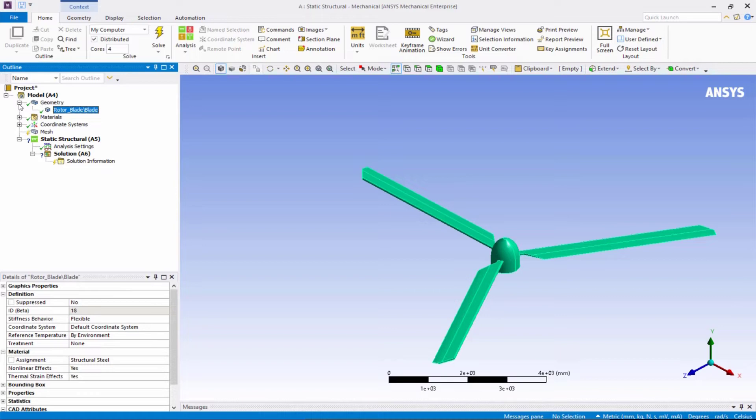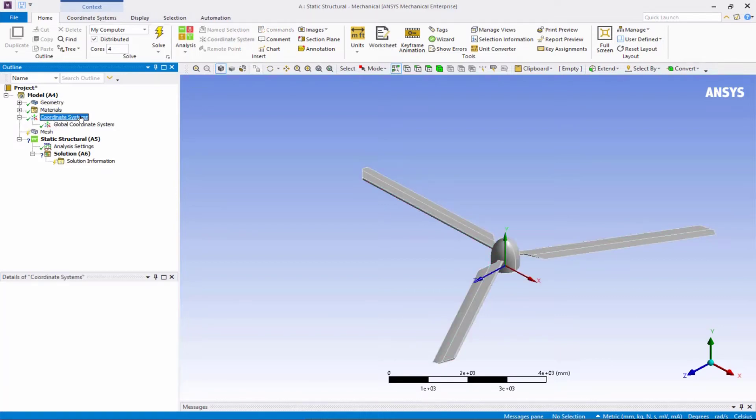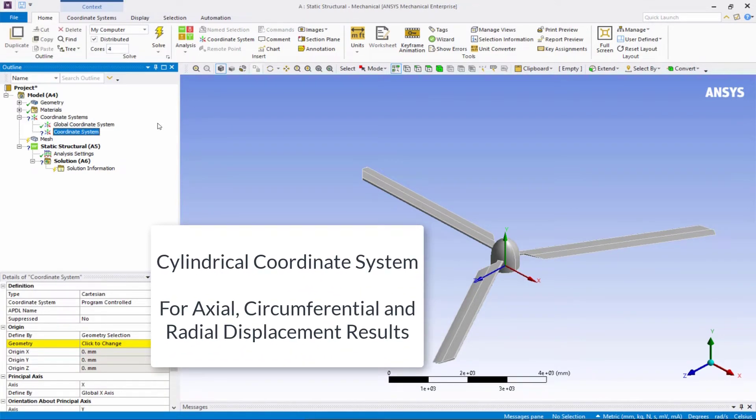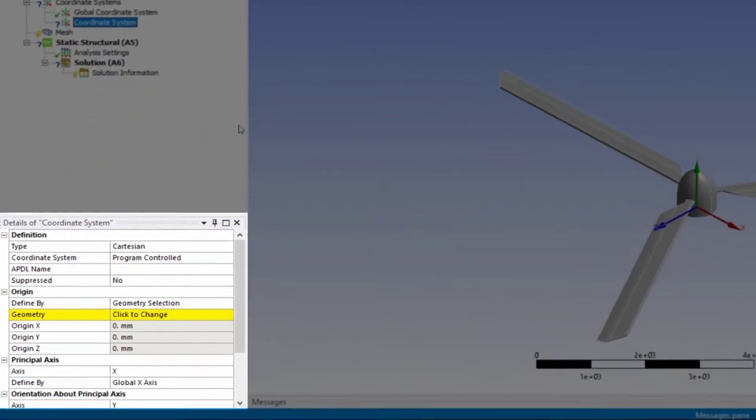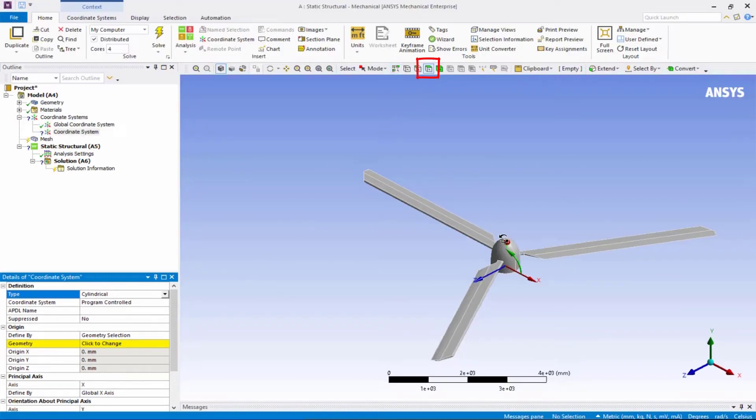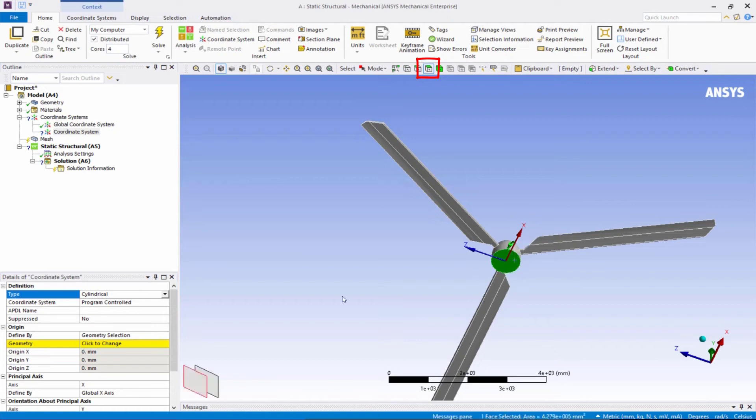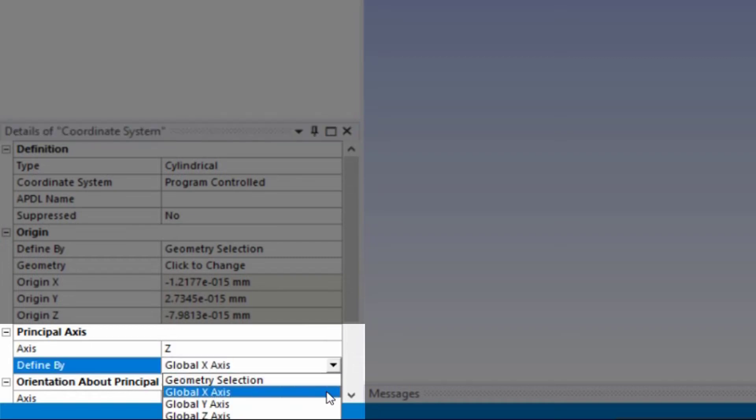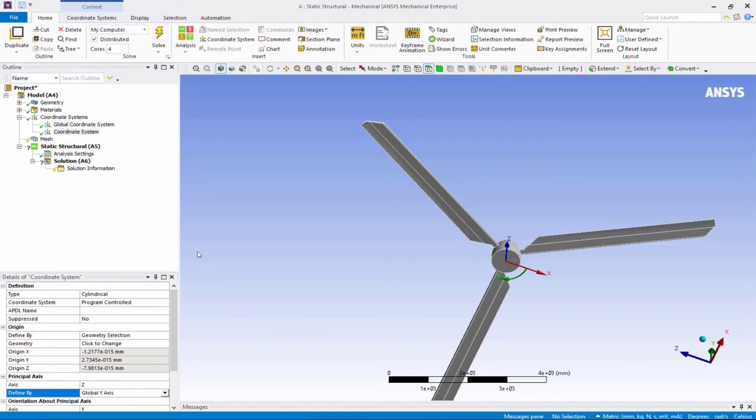Then go to coordinate systems, right-click Insert Coordinate System. For this workshop, a cylindrical coordinate system will be defined so that the axial, circumferential and radial displacements can be reviewed after solving the case. In details of coordinate systems, change the type to cylindrical. Select the face selection filter and select the end surface of the blade connecting to the shaft and click Apply. For the principal axis, choose axis as Z and define by global Y axis. Now the cylindrical coordinate system is defined.